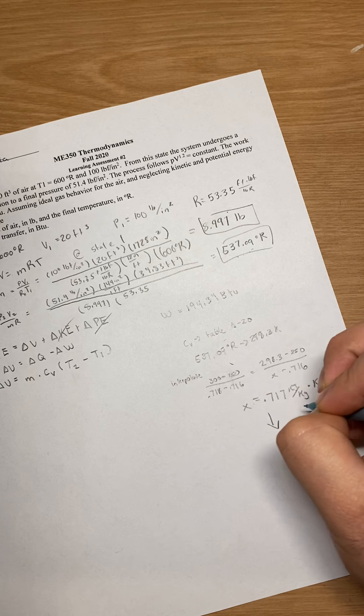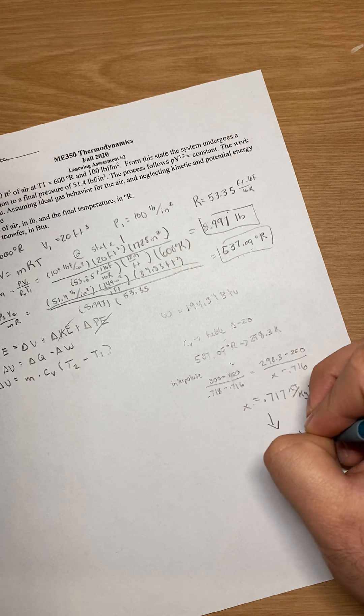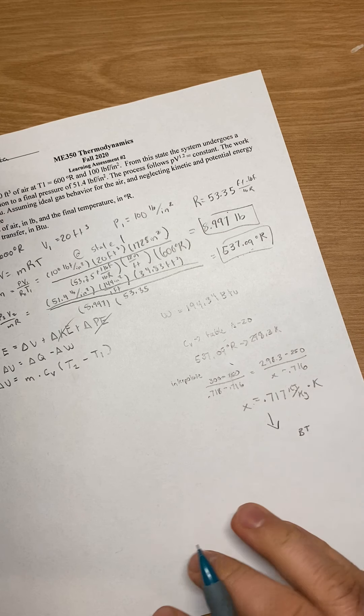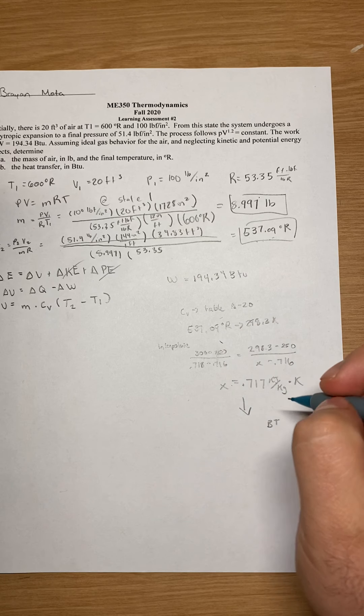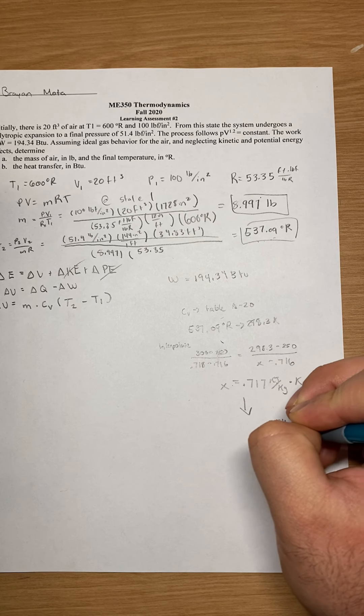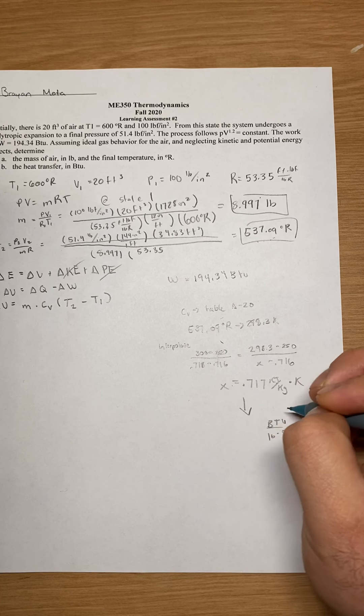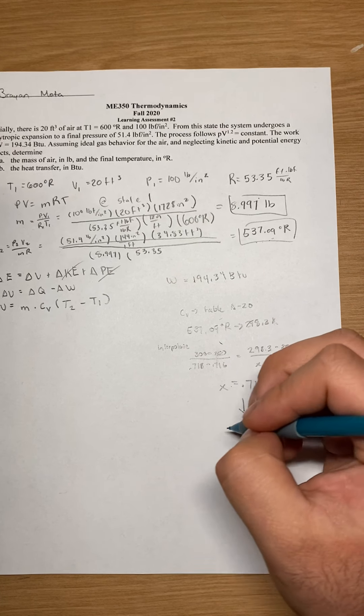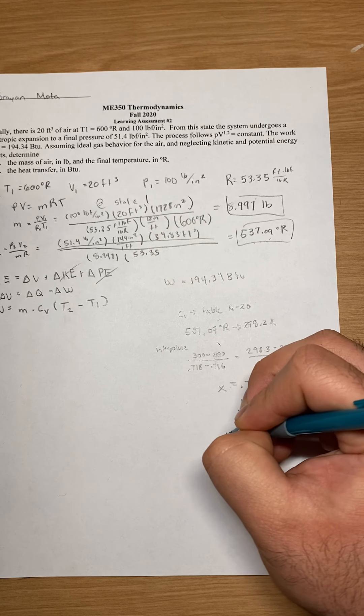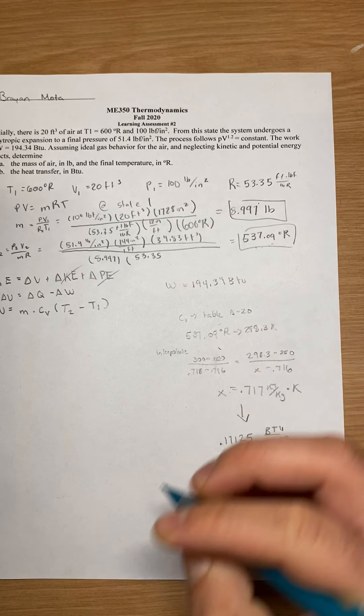We don't want that. We actually want our units to be in BTU over pound Rankins. So if you convert that, that turns into 0.17125.